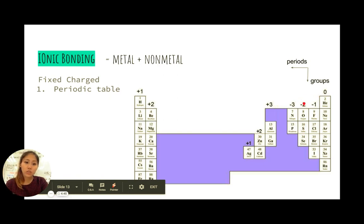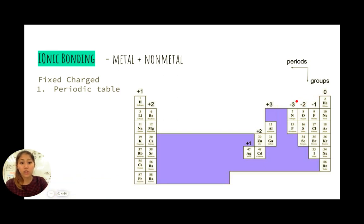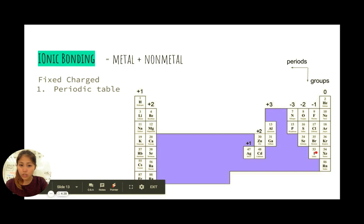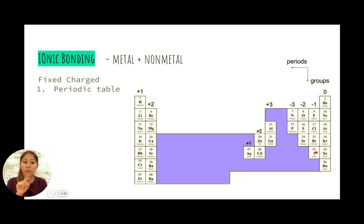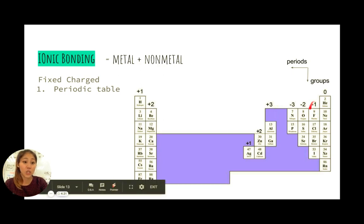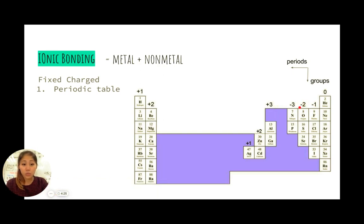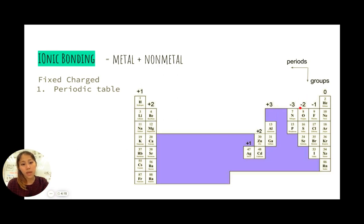Group 7 gains one electron because it already has 7 electrons in its outer shell and needs just one more to reach 8. Group 6 has 6 electrons in its outer shell and needs 2 more to be stable, so it gains 2 electrons and has a -2 charge. Group 5 gains 3 electrons. So groups 5, 6, and 7 all form anions by gaining electrons.